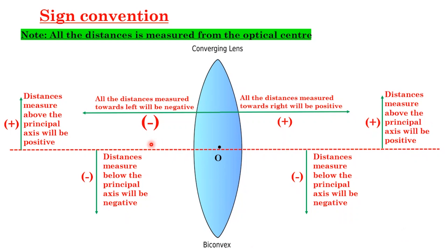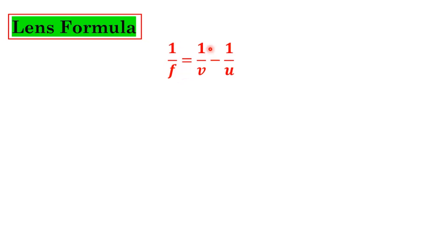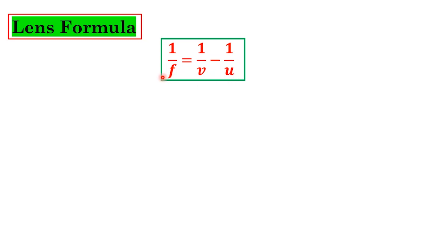The lens formula gives the relationship between the focal length, the position of the image, and the position of the object. It is given by 1/f = 1/v − 1/u. This is very similar to the mirror formula, but in the mirror formula we had a positive sign whereas here it is negative.